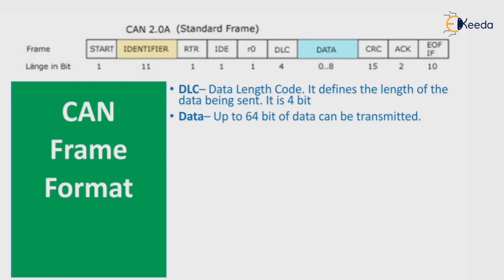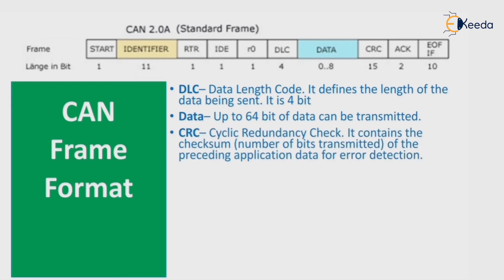DLC — Data Length Code — defines the length of data being sent and is 4 bits. The data field can carry up to 64 bits of data. CRC — Cyclic Redundancy Check — contains the checksum of the number of bits transmitted in the preceding application data, used for error detection.